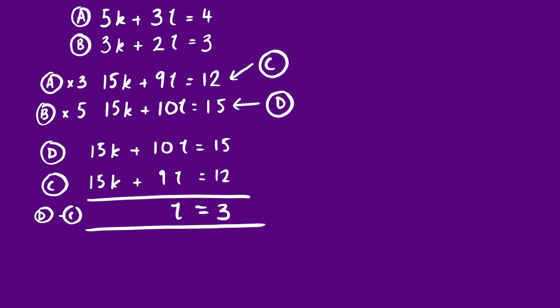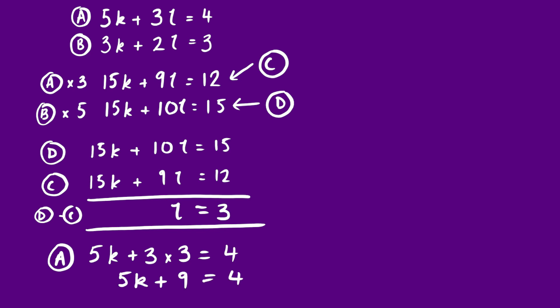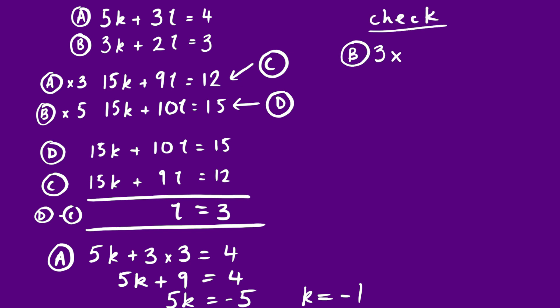Substituting l = 3 back into equation A: 5k + 3 × 3 = 4; 5k + 9 = 4; so 5k = −5, meaning k = −1. Checking in equation B: 3 × (−1) + 2 × 3 = −3 + 6 = 3. Correct.